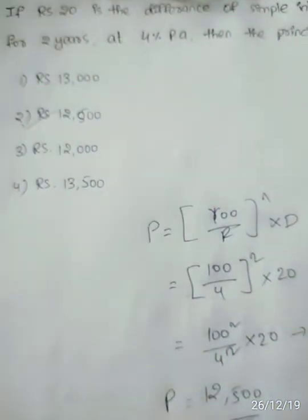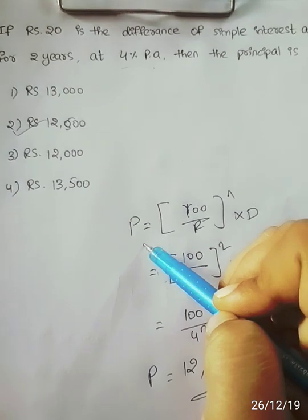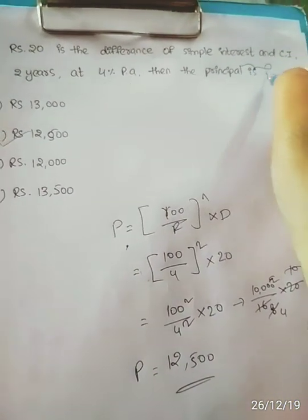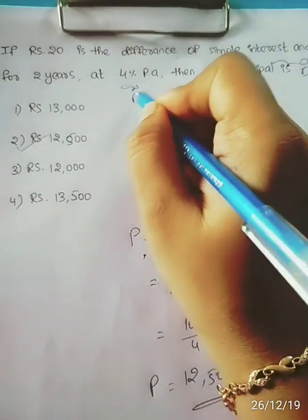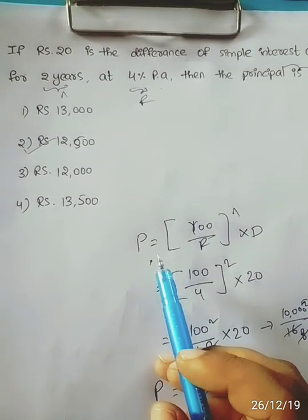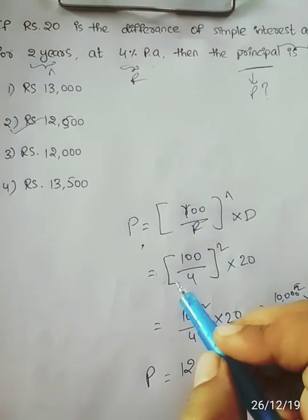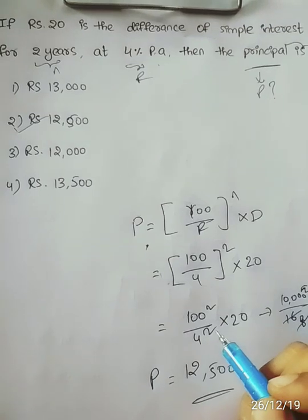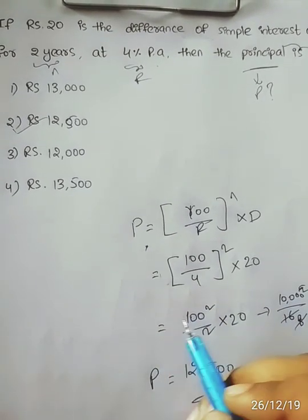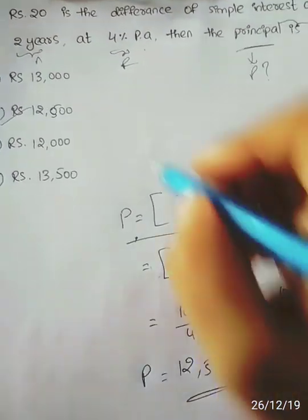Option 2 is the correct answer. We substitute the values in the formula and get the answer within seconds. To summarize: D is the difference between Compound Interest and Simple Interest, R is the rate percentage, and n is the number of years. We find the principal using P = (100/R)^n × D. Simple Interest and Compound Interest problems depend on only three formulas.